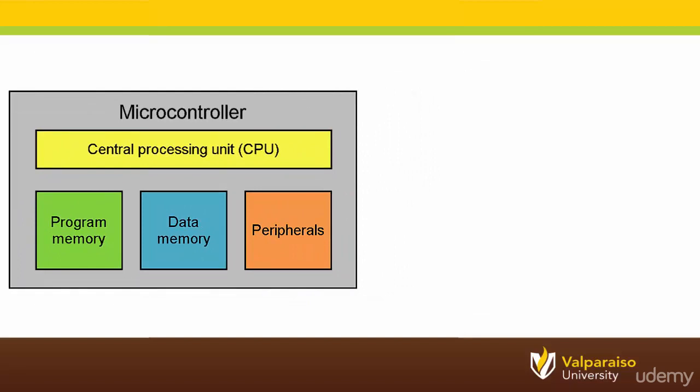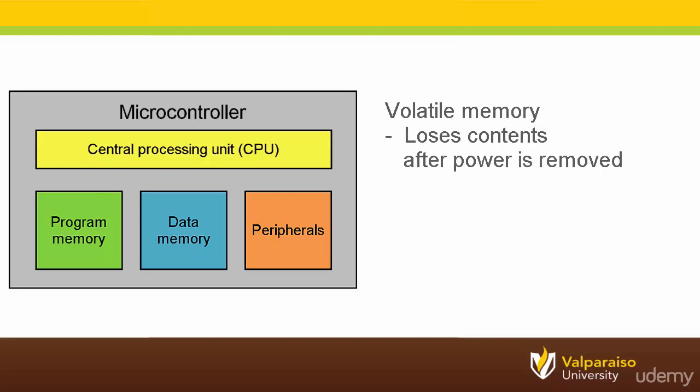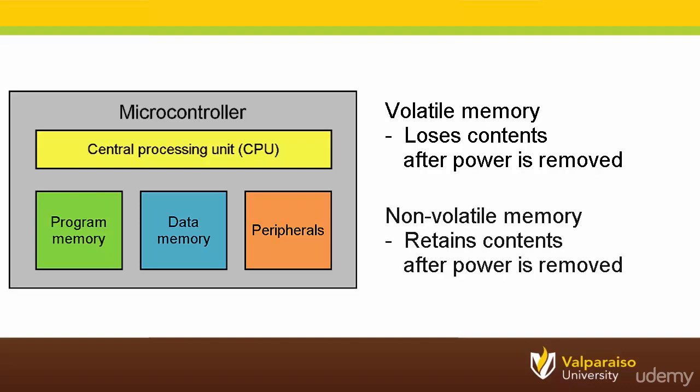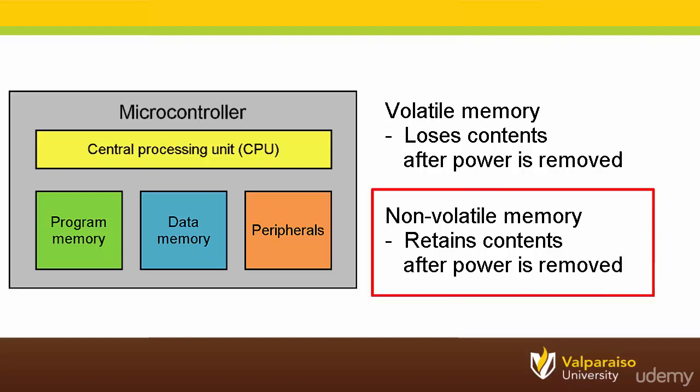There are two important terms used to describe program memory in embedded systems. The first is volatile memory — a memory is volatile if it loses its contents after power is removed. Next is non-volatile memory, which is the opposite: non-volatile memories retain their contents after power is removed. Most embedded systems store their programs in non-volatile memory, as the embedded system must be able to retain its program after it loses power.